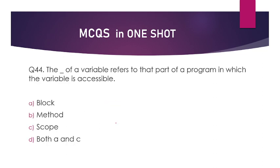The dash of a variable refers to that part of the program in which the variable is accessible — block, methods, both A and C? You have read this question many times. This question is a homework for you all. Try it out and let me know the answer in the comments or in the telegram.